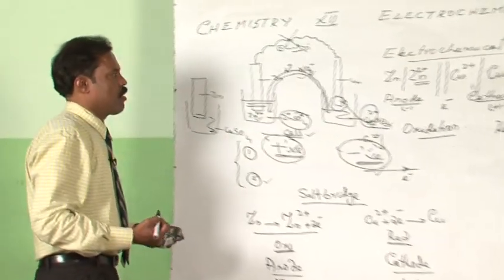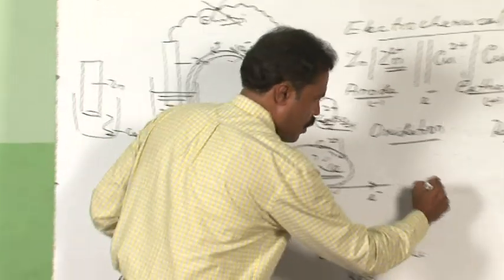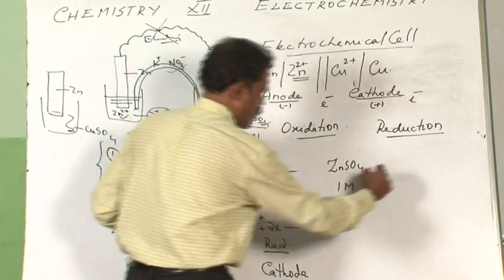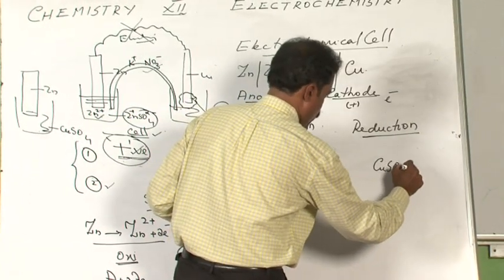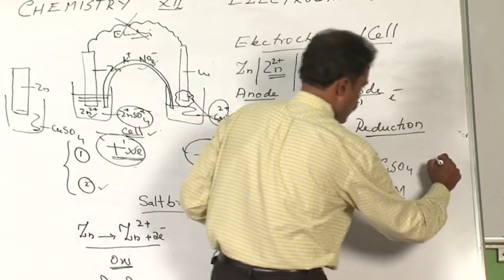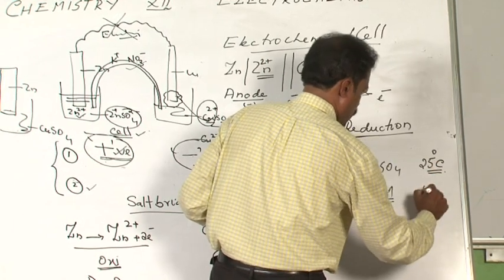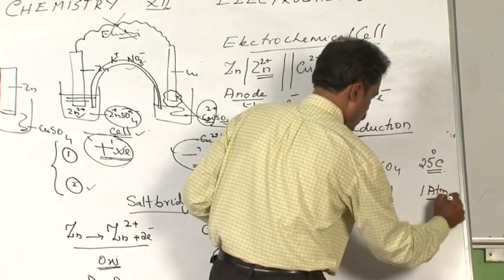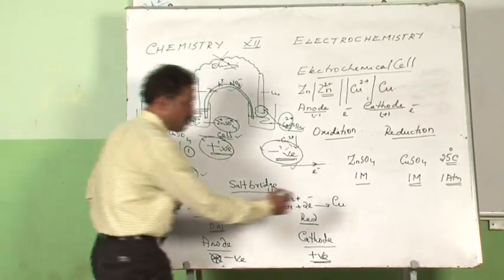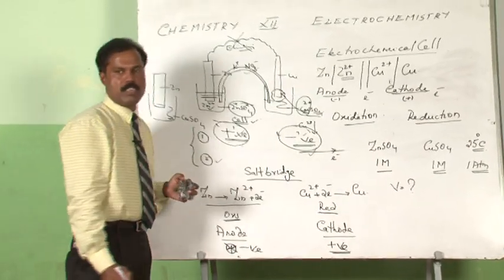We will discuss if you construct a cell using a copper sulphate solution whose molarity is 1. Let us assume that the temperature at which the cell operates is 25 degree Celsius and the pressure is 1 atmosphere. Under these circumstances, if you measure the voltage of the cell, how much would the voltage be under these conditions?